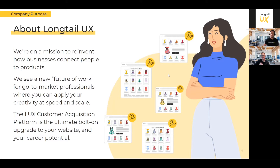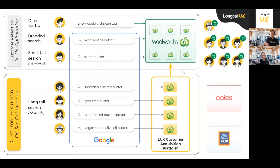We'll start with a super high-level schematic of where we sit in the world, anticipating the question of what we actually help with. One of our clients is Woolworths in Australia — their largest grocer, actually in the southern hemisphere, and probably third or fourth if based in the US. We try to divide the world into two different areas: on-site and off-site.